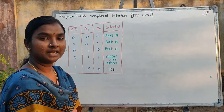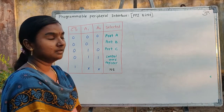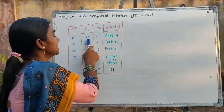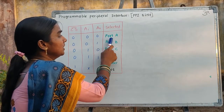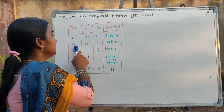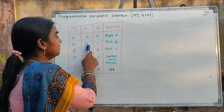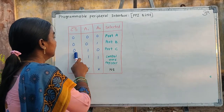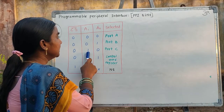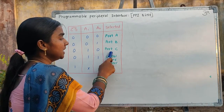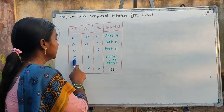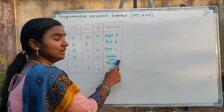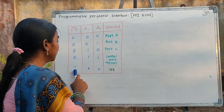Depending on the values on the chip select pin, A1 pin, and A0 pin, the following ports are selected. If chip select is 0, A1 is 0, and A0 is 0, port A is selected. If chip select is 0, A1 is 0, and A0 is 1, port B is selected. When chip select is 0, A1 is 1, and A0 is 1, the control word register is going to be selected.